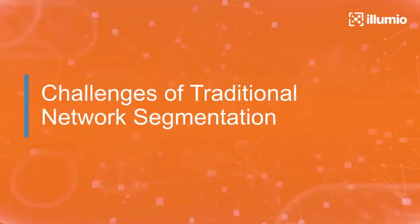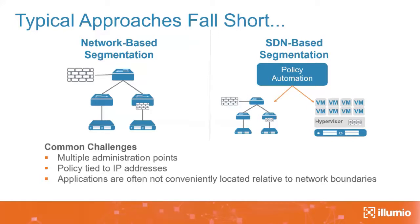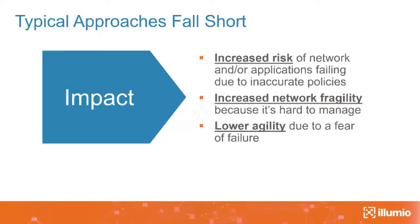Typical approaches to security segmentation fall into two buckets: traditional network-based segmentation and software-defined networking (SDN)-based segmentation. Both have inherent limitations: multiple administration points, policy tied to IP addresses, applications not conveniently located in network boundaries, and inconsistent segmentation capabilities across devices and environments. We've seen environments with five separate segmentation solutions that cannot be governed consistently. These limitations result in increased risk of network or application failures due to inaccurate policies, increased network fragility, and lower agility due to fear of failure.